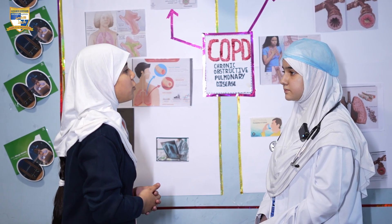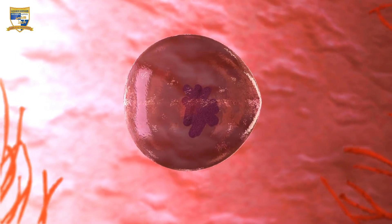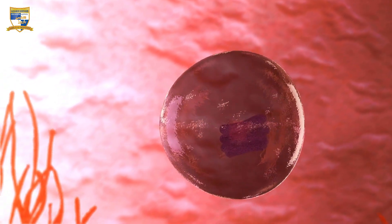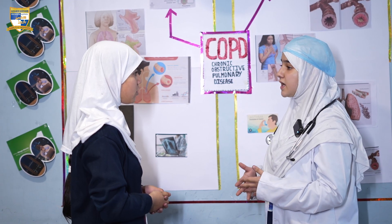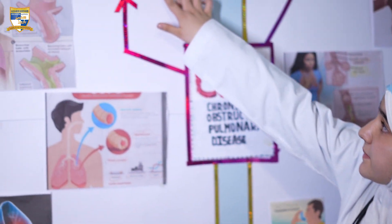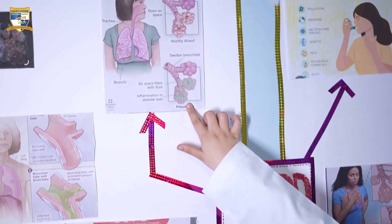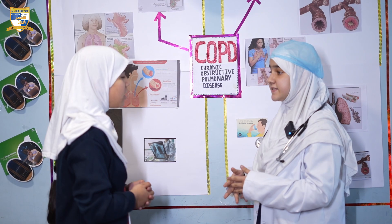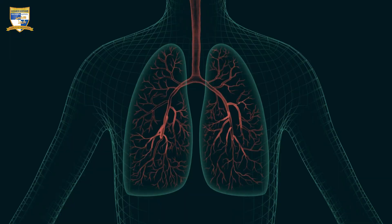Pneumonia is a chronic obstructive pulmonary disease caused by a bacterium called Streptococcus pneumoniae. It is responsible for inflammation in the lungs — as you can see here, inflammation in the alveolar wall.